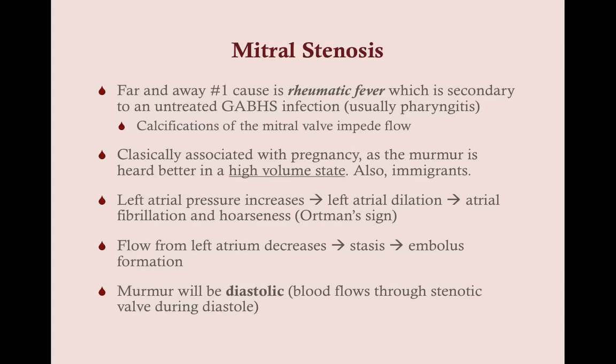For mitral stenosis, far and away the number one cause — even in the United States — is rheumatic fever, due to a Group A beta-hemolytic strep infection, usually a pharyngeal infection from Strep pyogenes. When you develop rheumatic fever, you get calcifications of the mitral valve, and those calcifications impede flow through the mitral valve. This causes a buildup of blood in the left atrium, leading to left atrial hypertrophy and dilation.